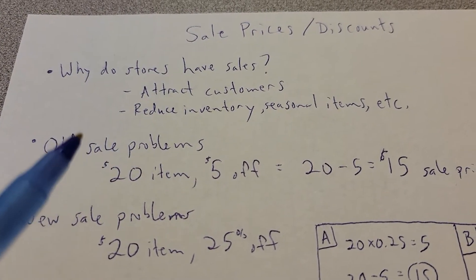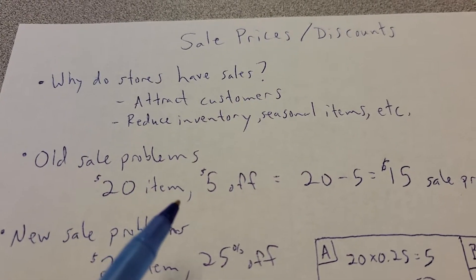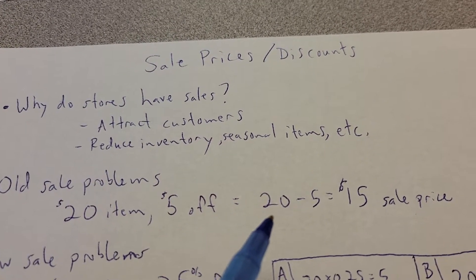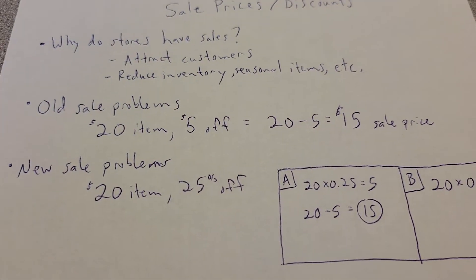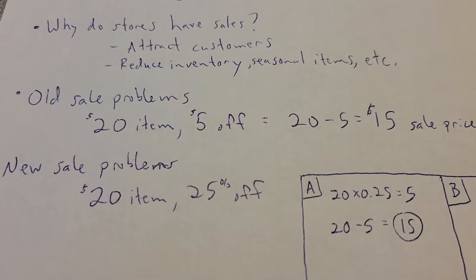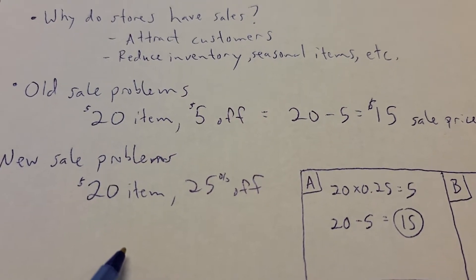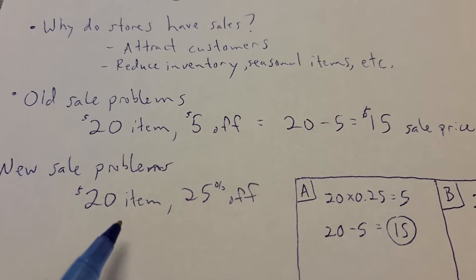Now, the old sale problems you used to work on would probably look like this. You had a $20 item, it's $5 off, so you would take $20 minus $5 and get $15 for the sale price. Your new version of sale problems will involve percents. And using the skill we learned yesterday, about percent of a number, comes into play here.